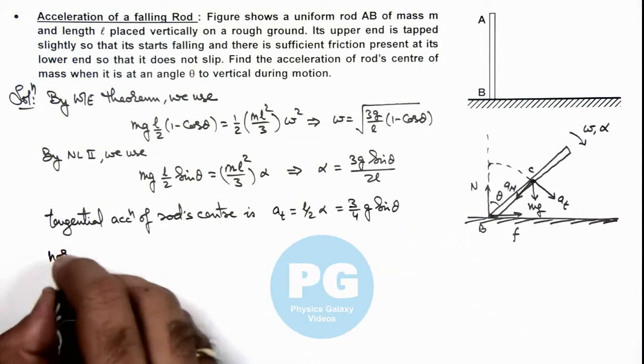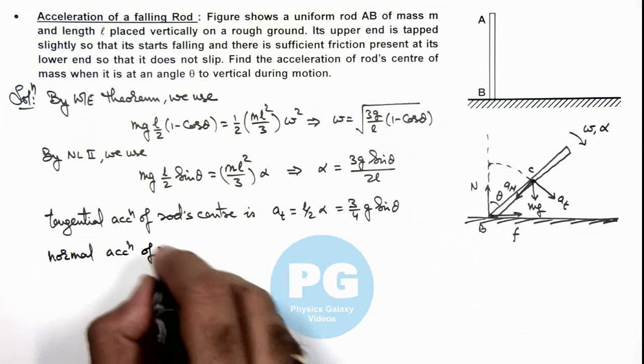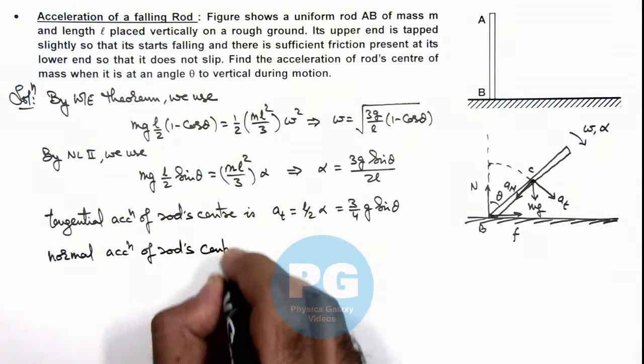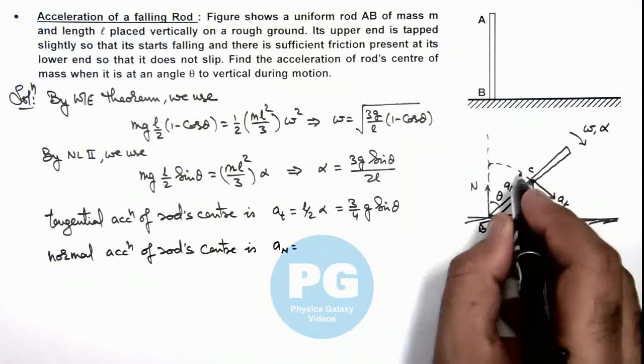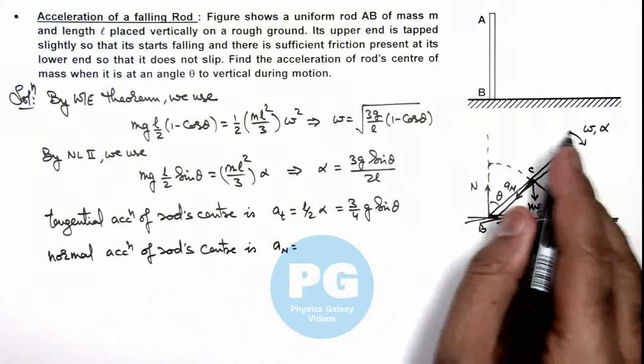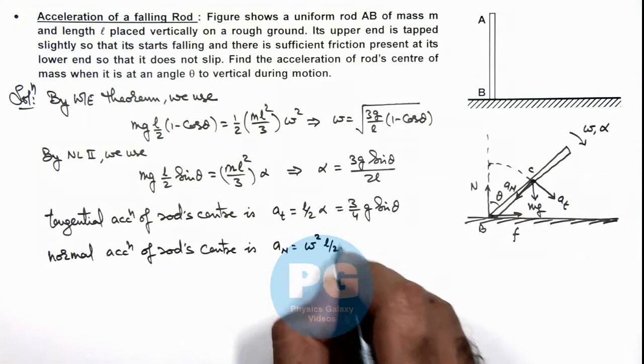If we calculate the normal acceleration of the rod's center, the normal acceleration is due to the circular motion of the center. As its angular speed is omega, this is given by ω²(l/2).